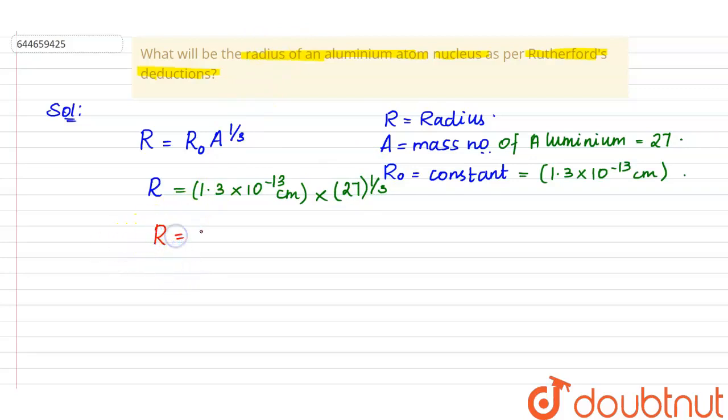So here when we simplify this, 1.3 × 10⁻¹³ into 27 to the power 1/3 will be 3. So finally radius will be equivalent to 3.9 × 10⁻¹³ centimeter.